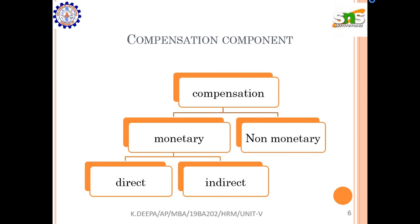The next important topic is compensation components, divided into two main categories: monetary and non-monetary. Monetary compensation is based on money. Non-monetary compensation refers to other rewards or benefits the employee receives in accordance with their work. Within monetary, there are direct and indirect components.